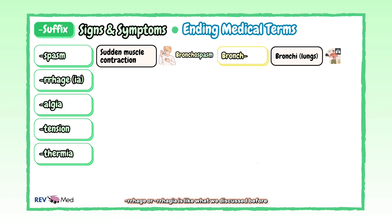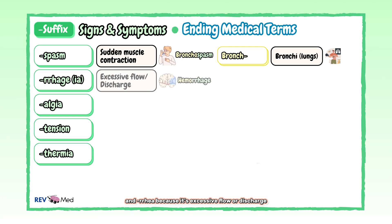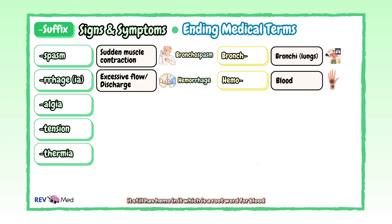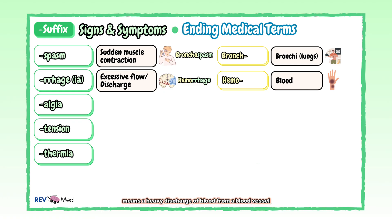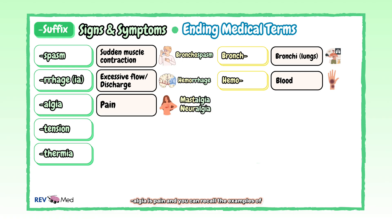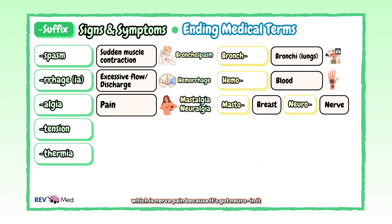"-Rrhagia" or "-rrhage" is like "-rrhea" because it's excessive flow or discharge. The most common example is a hemorrhage. While we call it a hemorrhage, it still has "hemo" in it, which is our root word for blood. Hemorrhage means a heavy discharge of blood from a blood vessel. "-Algia" is pain. You can recall the examples of mastalgia, which is breast pain — "mast" — and neuralgia, which is nerve pain because it's got "neuro" in it.